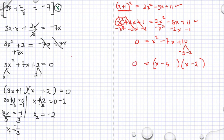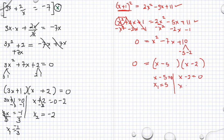Set each factor equal to 0. x minus 5 is equal to 0 or x minus 2 is equal to 0. Adding both sides of the equation by 5, then we have x is equal to 5. Adding both sides of the equation by 2, then we have x is equal to positive 2. That's our x sub 2.